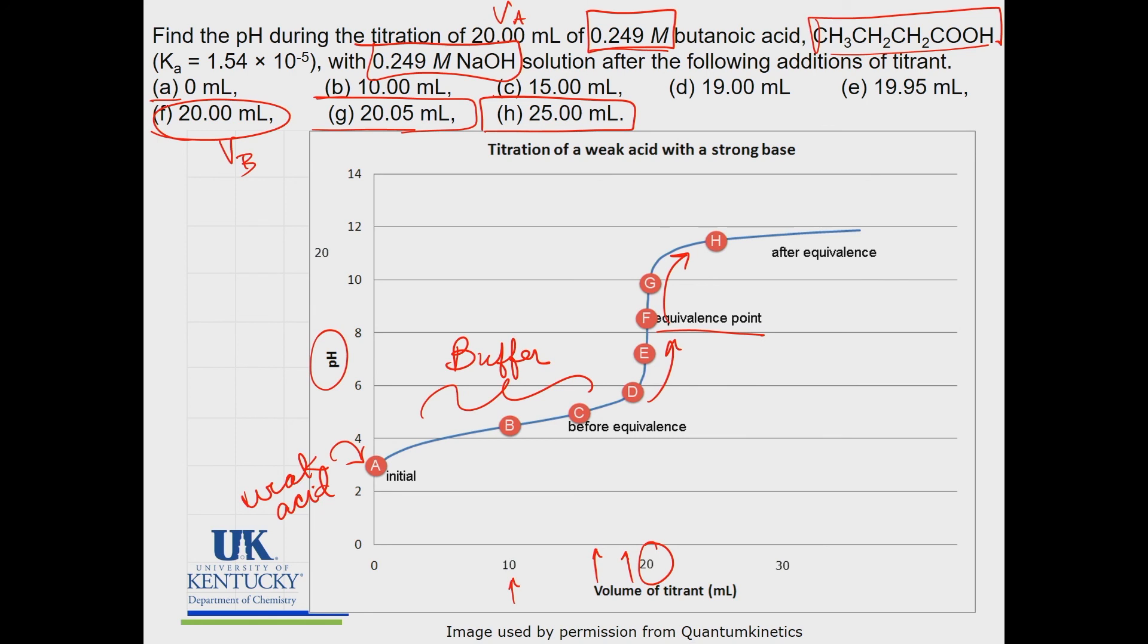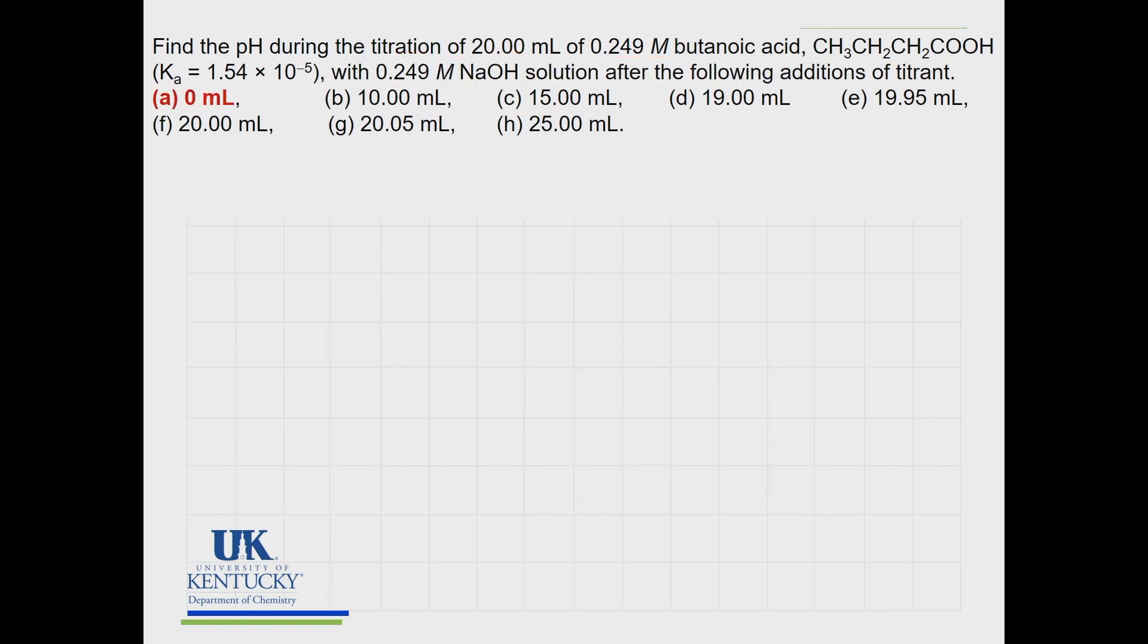So that is the reaction that we're going to consider. I want to do a whole series of videos where you can watch me do the calculations. You can pick and choose - maybe you know how to do the pH of a weak acid and can skip A, but you'll want to see how to do something in the buffer range or the equivalence point. So we're going to work through these one at a time.